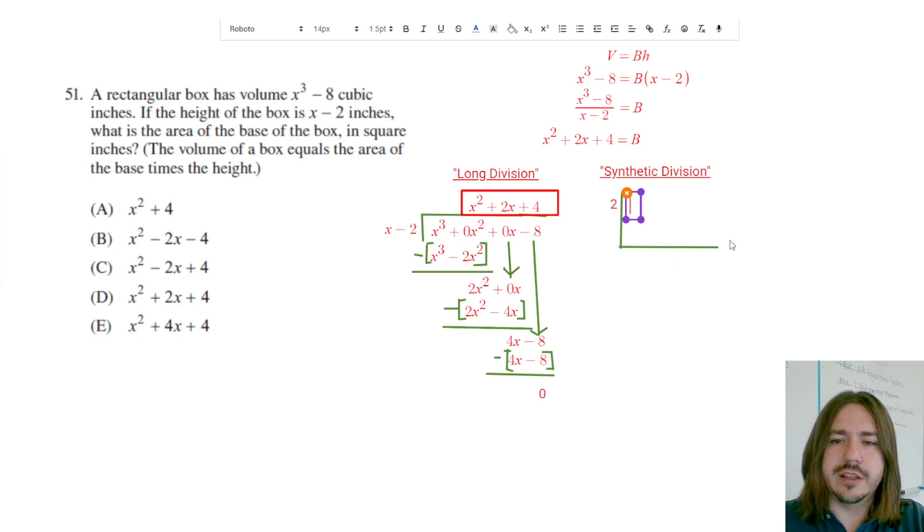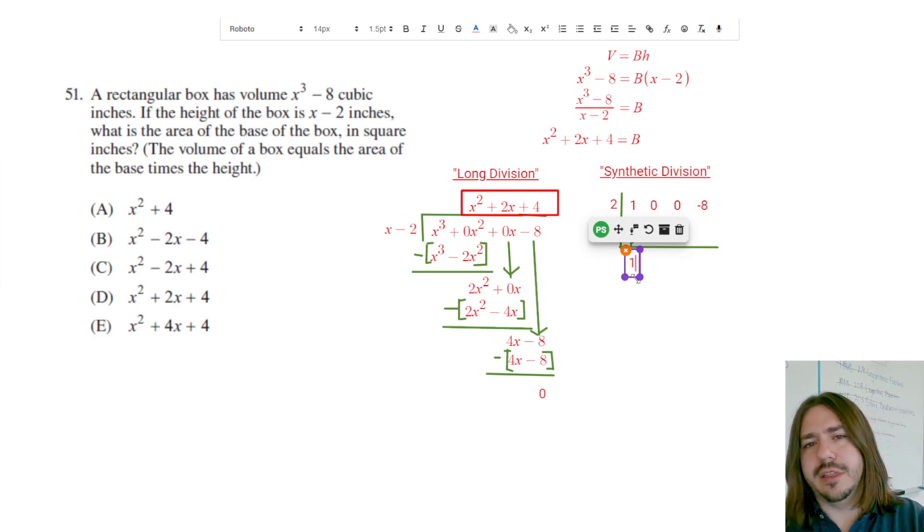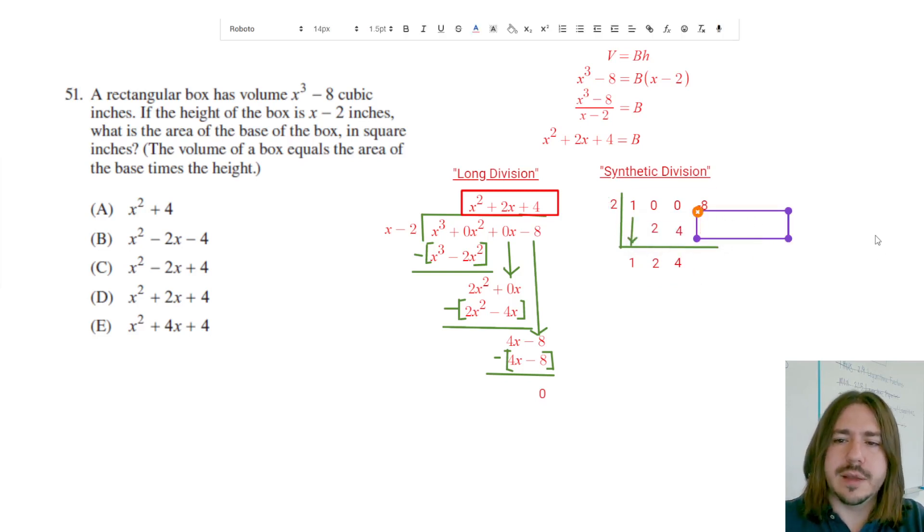If I look at the x cubed minus 8 really broken out here, those are going to be the numbers 1, 0, 0, negative 8 that I'm going to write. The way synthetic division works is you're going to bring down this first term, 1. Whatever that number is, you're going to write that here. And then we're going to go through a couple of steps here and repeat those steps until we get to the end. We're going to multiply 1 times 2 to get 2. Then we add the column: 0 plus 2 is 2. 2 times 2 is 4. So again we're going to multiply whatever we got down here by this 2. And then 0 plus 4 is 4. 4 times 2 is 8. I'm just repeating those same steps over and over again. 8 plus negative 8 is 0 and then we're done.